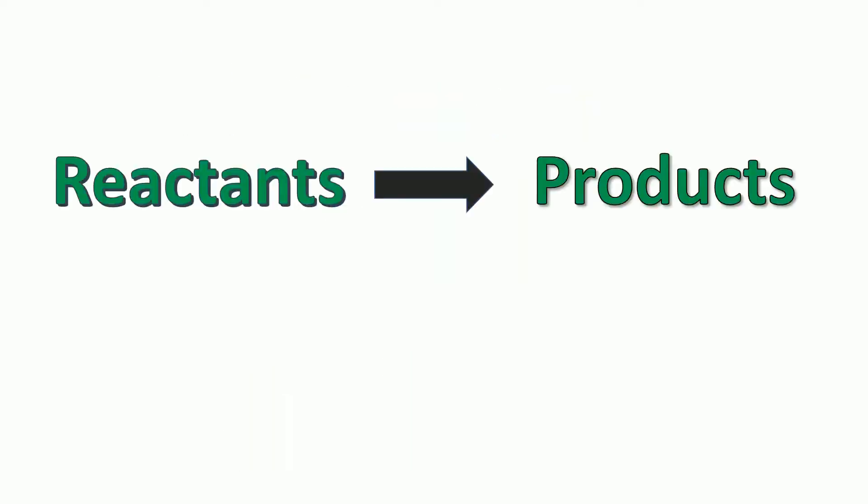When writing word equations, the reactants always go on the left. These are our starting chemicals. Then we have the arrow. The arrow means changes into, so the reactants change into something else. And on the right we always have our products, which are the chemicals that are made.